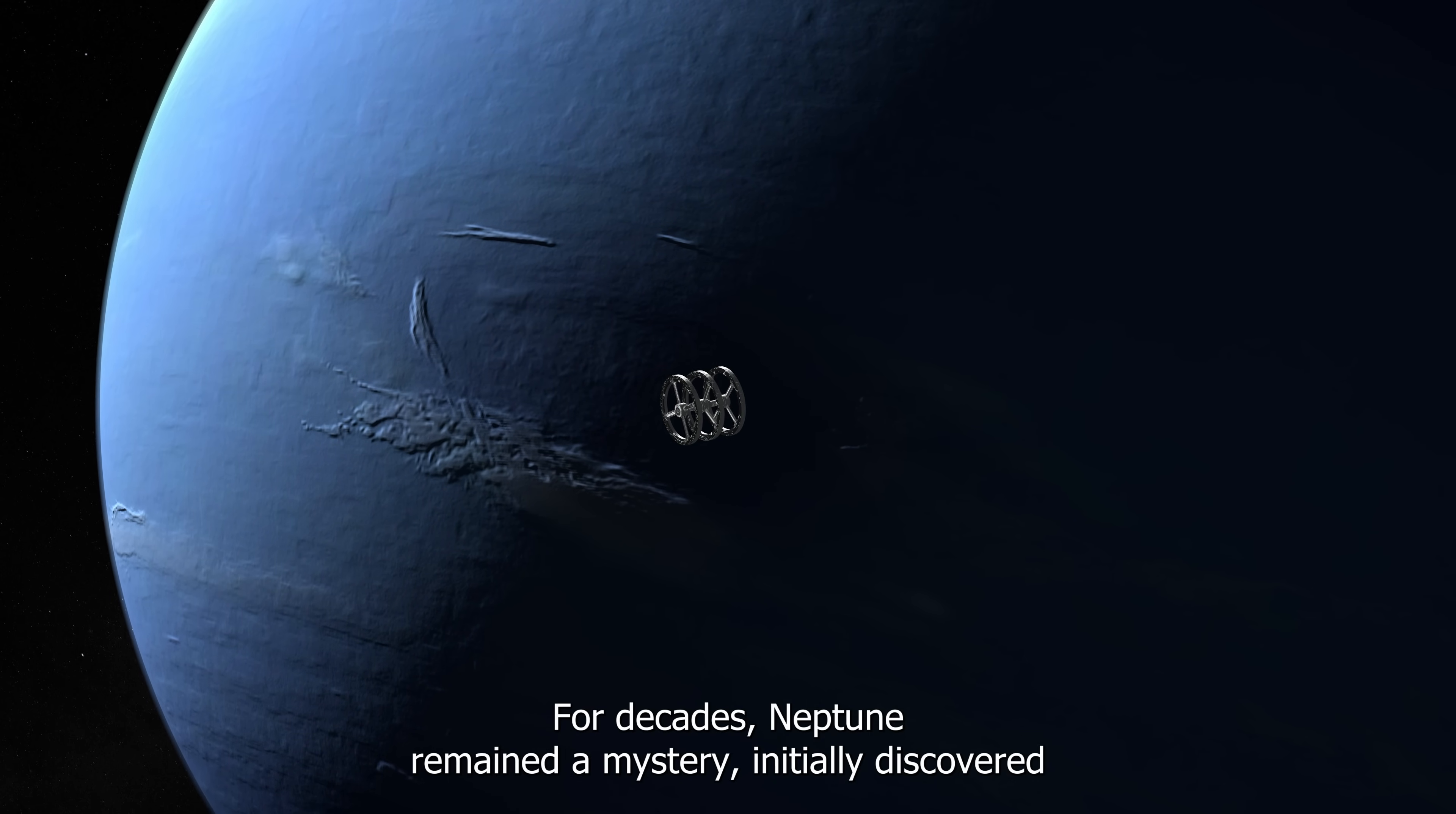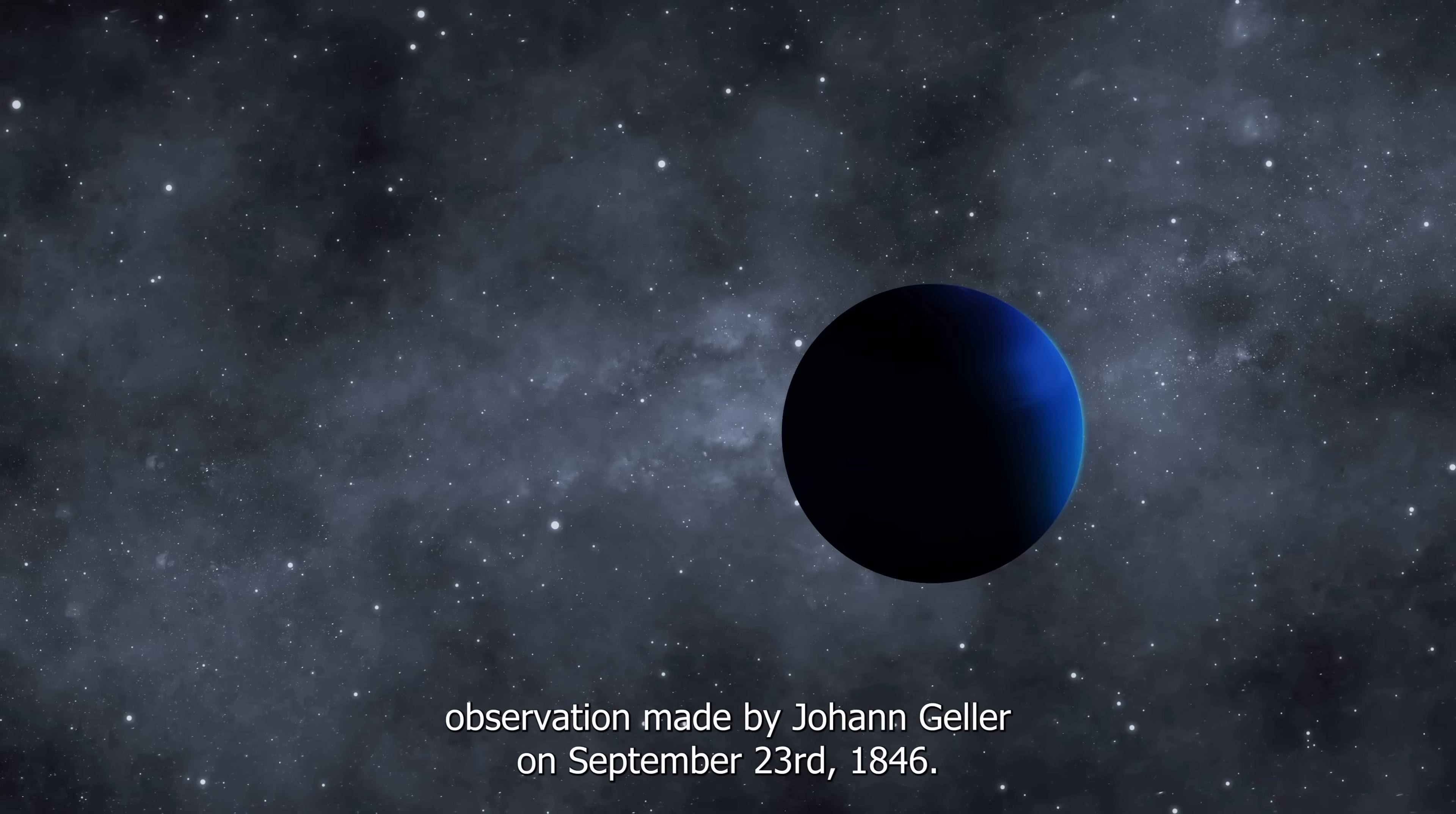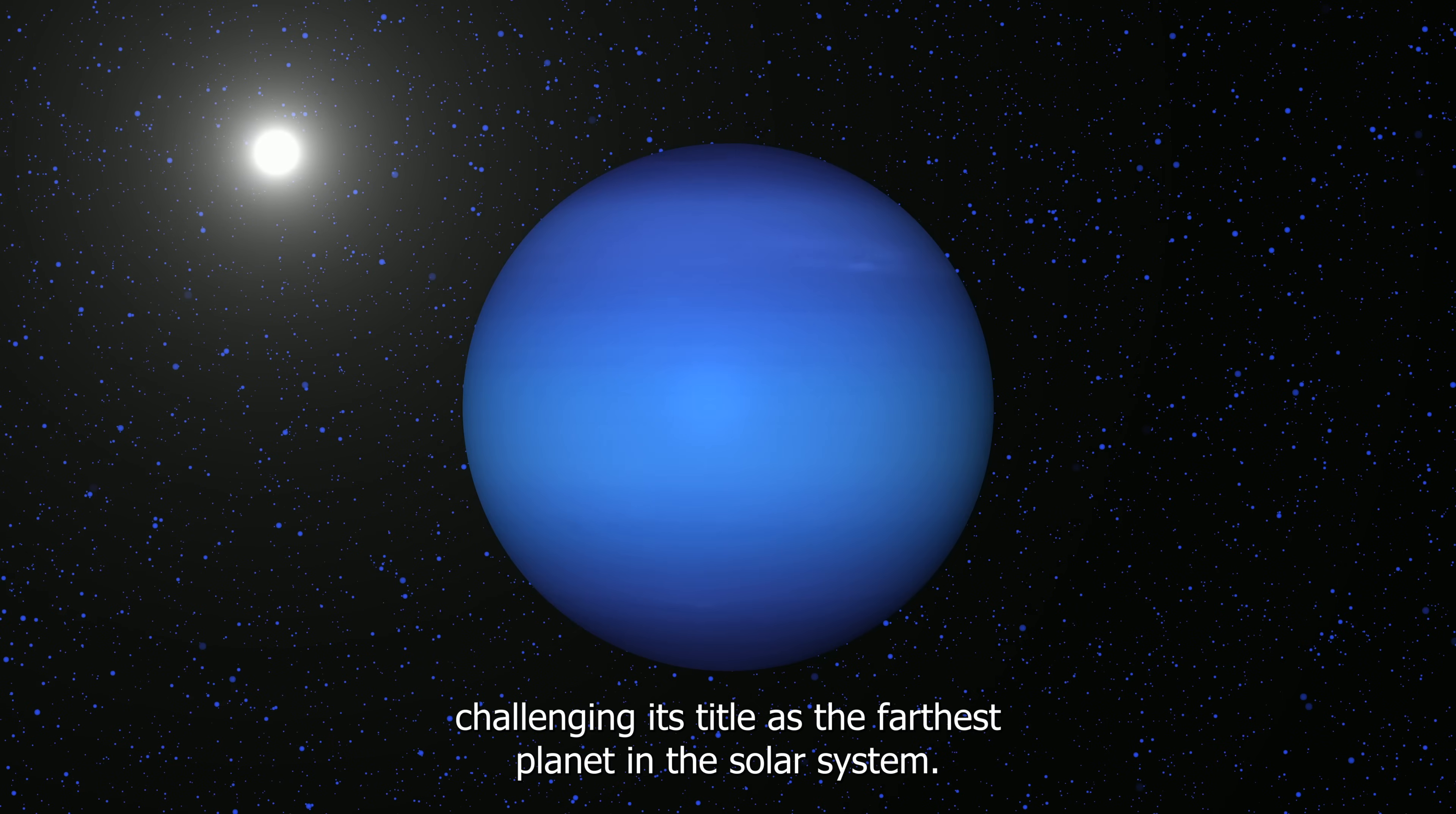For decades, Neptune remained a mystery, initially discovered through mathematical predictions rather than direct observations. Telescopes allowed us to observe this celestial body, with the first recorded observation made by Johann Galle on September 23, 1846. Voyager 2's flyby in August 1989 provided a better understanding of Neptune, challenging its title as the farthest planet in the solar system.